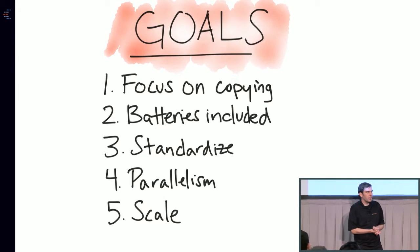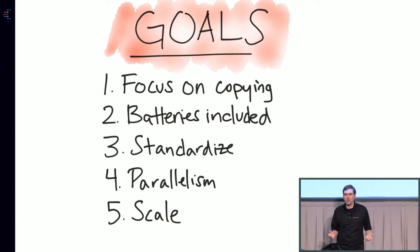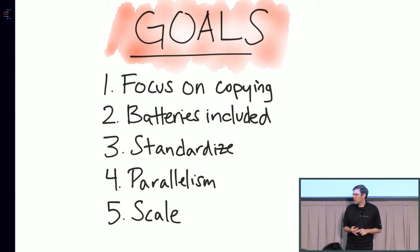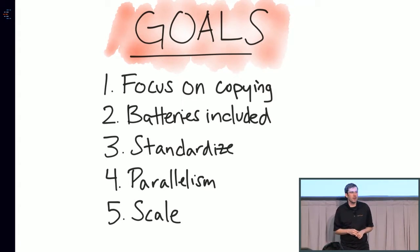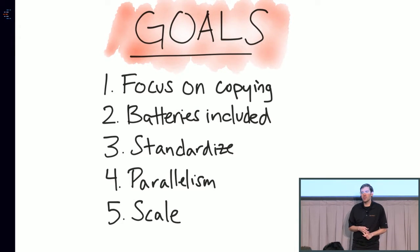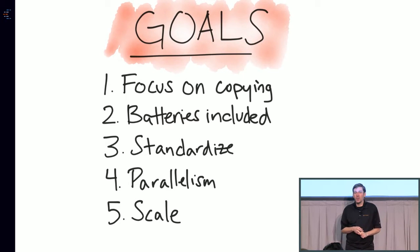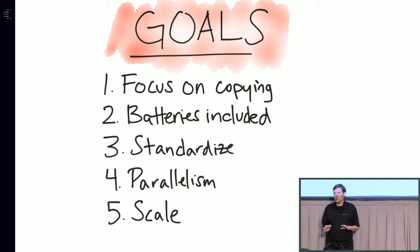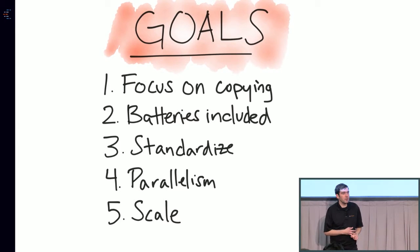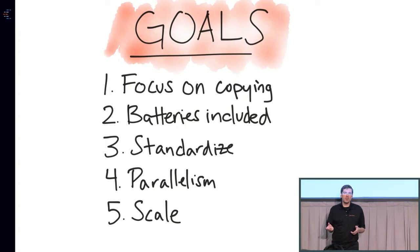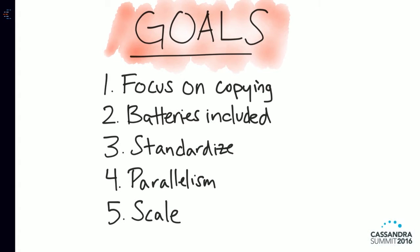The goals with Kafka Connect: first, we focus purely on copying data — this is really important because you get much weaker semantics if you don't. Second, batteries included — the framework handles as much as possible for connector developers. Third, standardize configuration, metrics, and monitoring across all connectors. Fourth, enable parallelism by default — many connector systems written without supporting structure are very simplistic and can't scale to large data sets. And fifth, support large-scale data.